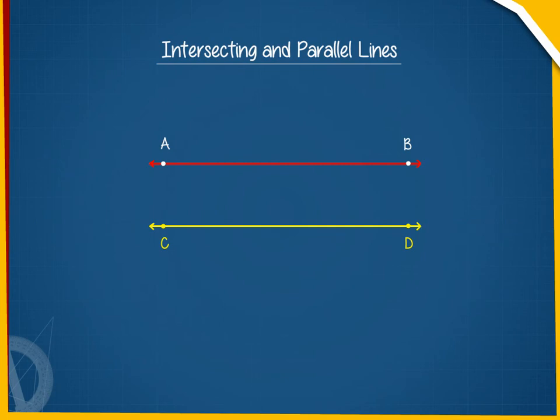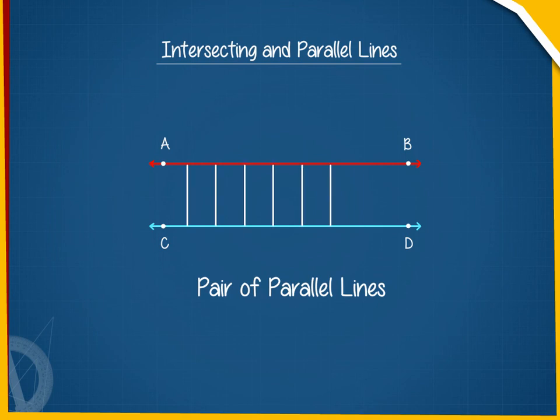Such a pair of lines is known as a pair of parallel lines. Such lines always keep a fixed distance from each other.